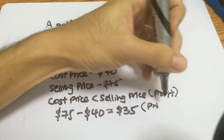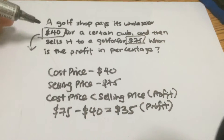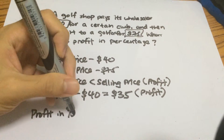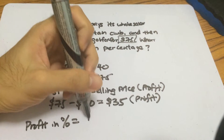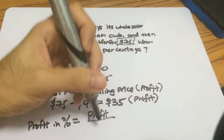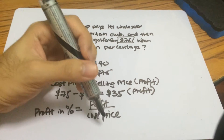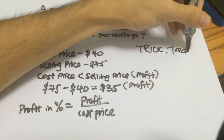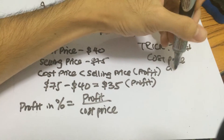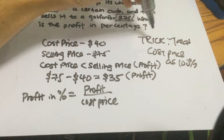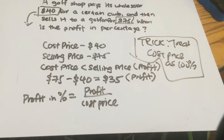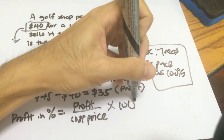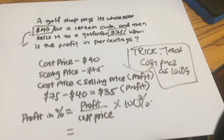To express the profit in percentage, the numerator is the profit and the denominator is always the cost price, because we always treat cost price as 100%. The trick here is to always treat cost price as 100%. So profit in percentage equals profit over cost price times 100%.